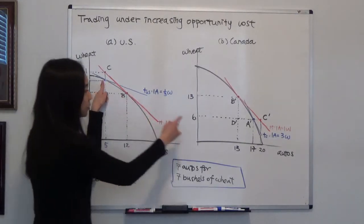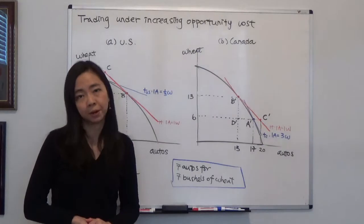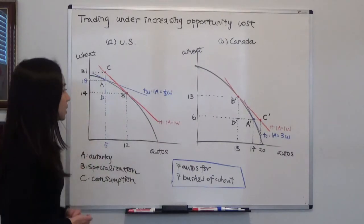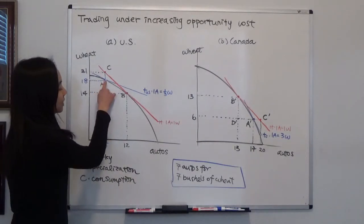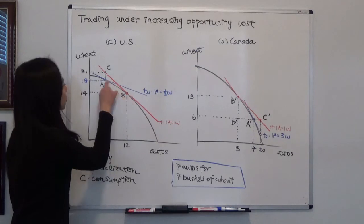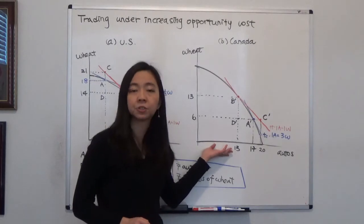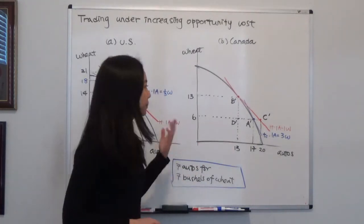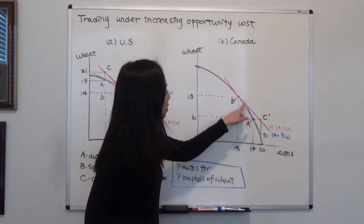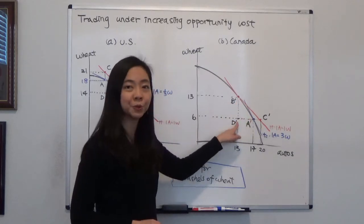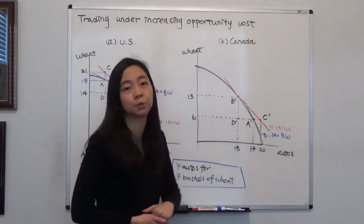Now, suppose we start to trade with each other and we're going to partially specialize on the goods that we have a comparative advantage in. The US has a comparative advantage in automobiles, so when we specialize, we're going to produce more automobiles and less wheat. Canada has a comparative advantage in wheat, so they're going to partially specialize on wheat, meaning they produce more wheat and fewer automobiles — though they still produce some automobiles, just fewer than before.